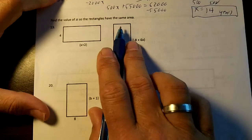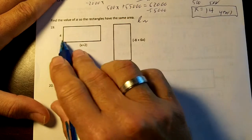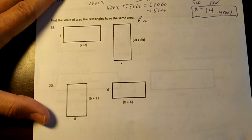Find the value of x. So the rectangles have the same area. Area is length times width. So we're just going to multiply the length and width and set them equal.